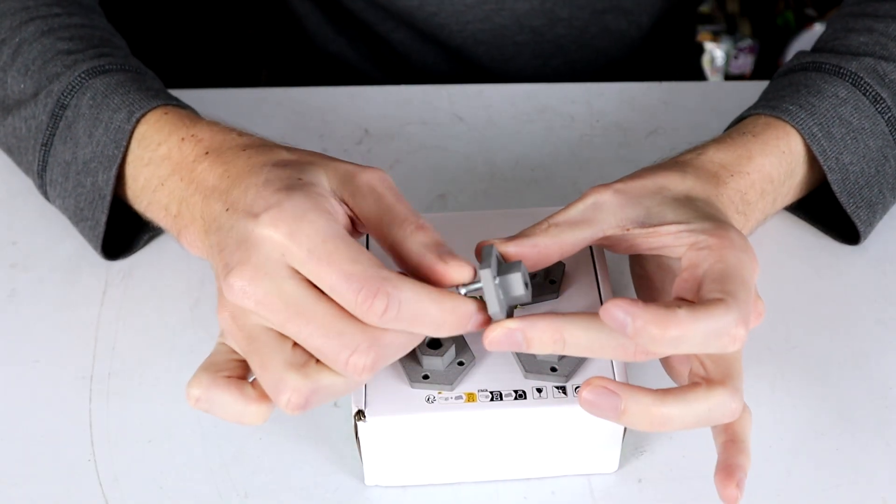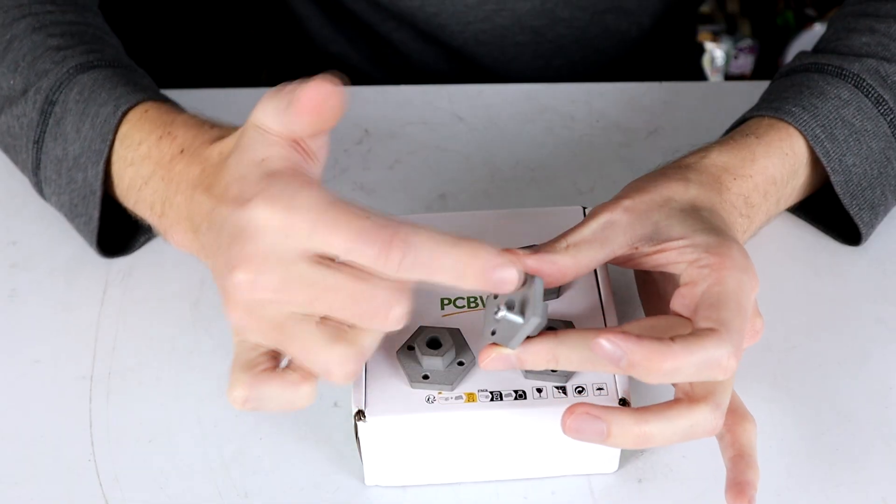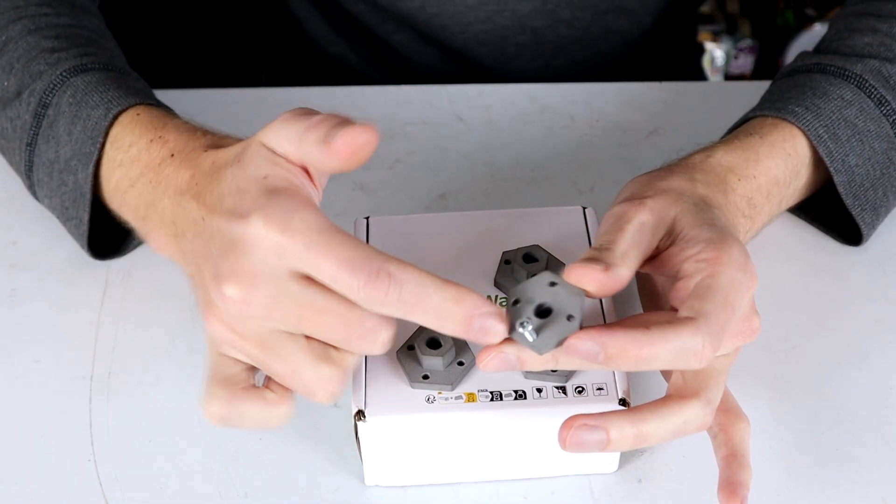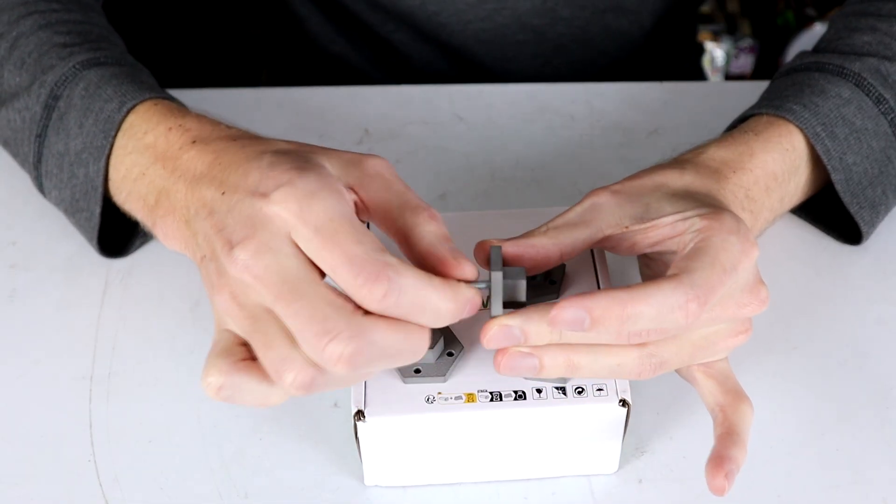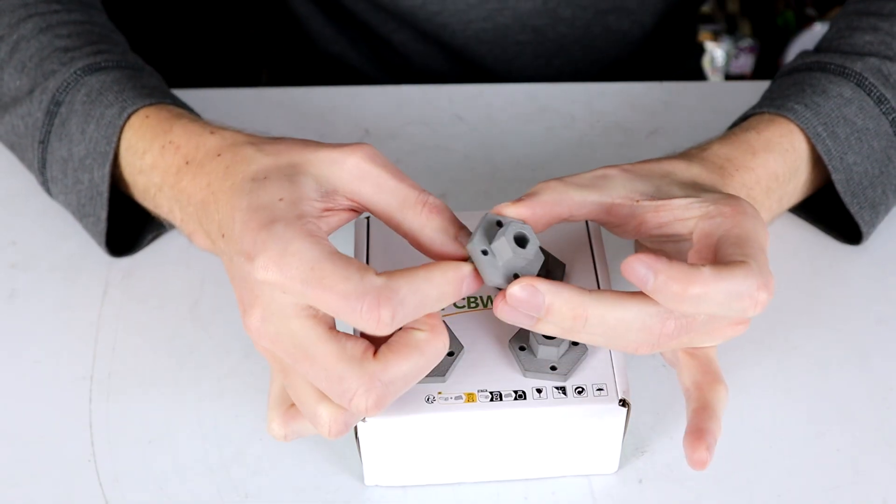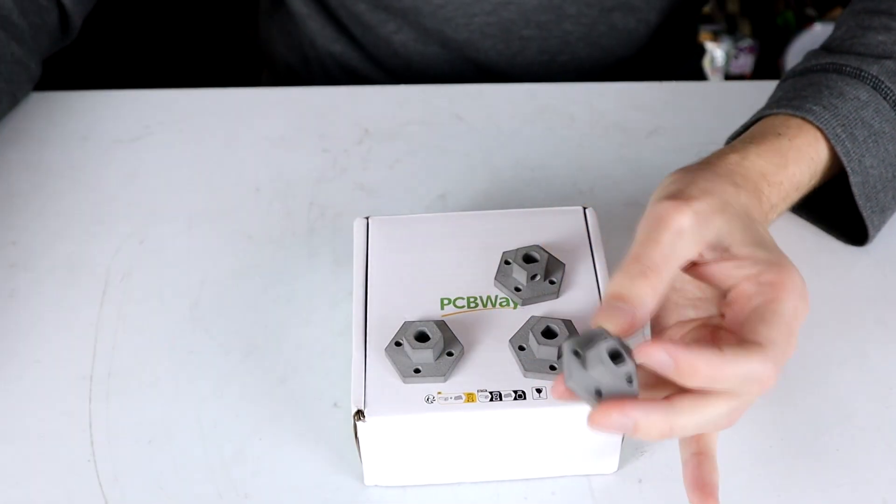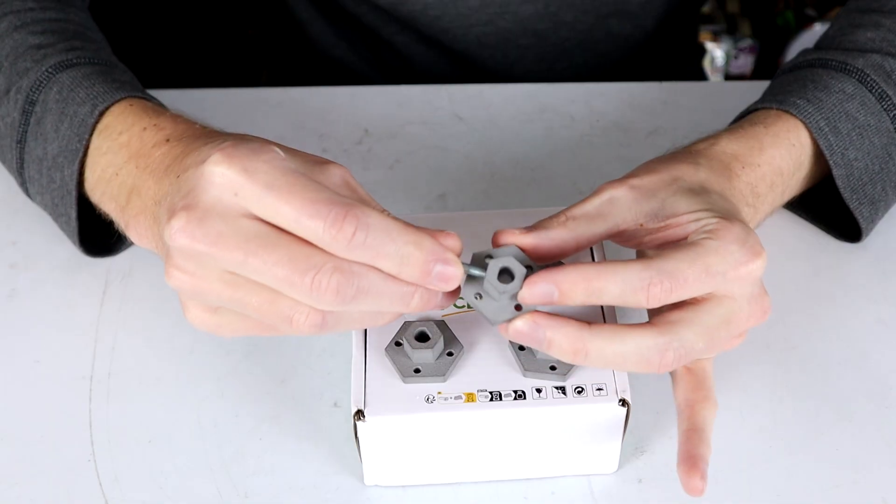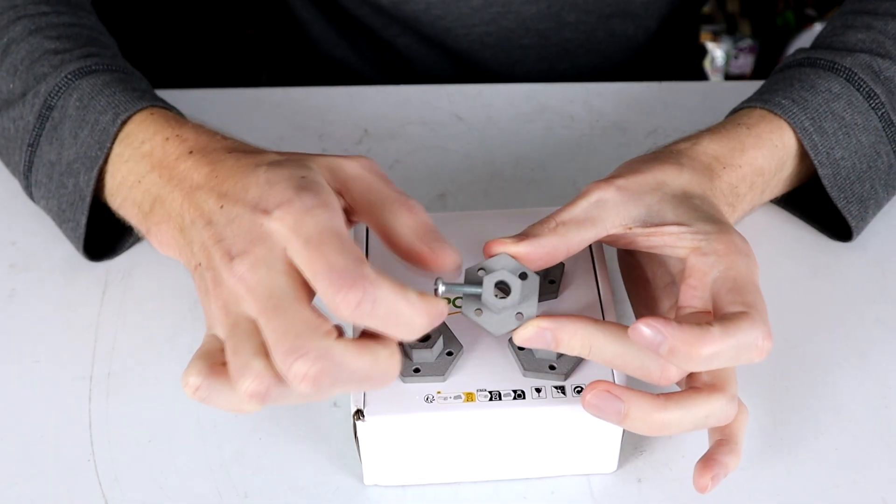Obviously we're going to need some Loctite to hold all this together because there is no locking mechanism on here, which would be fairly hard to do to put nylock into something like this which is a 3D printed part, and again 3D printed in steel which is insane that we can actually do that these days.